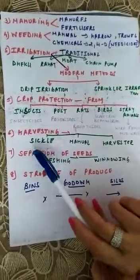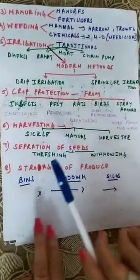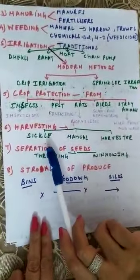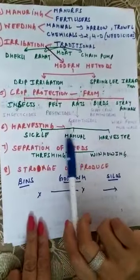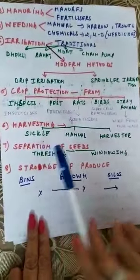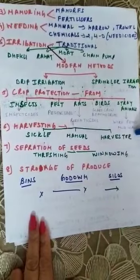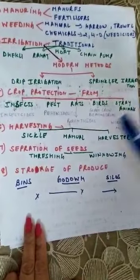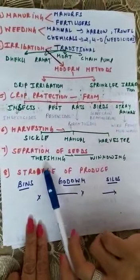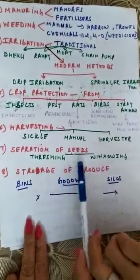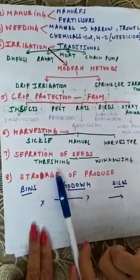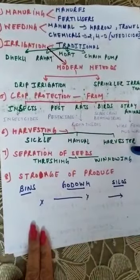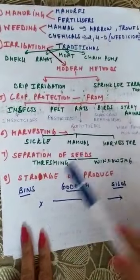The sixth practice is harvesting. Harvesting can be done manually with a sickle or with the help of a harvester. The seventh practice is separation of seeds — seeds are separated by threshing and winnowing.